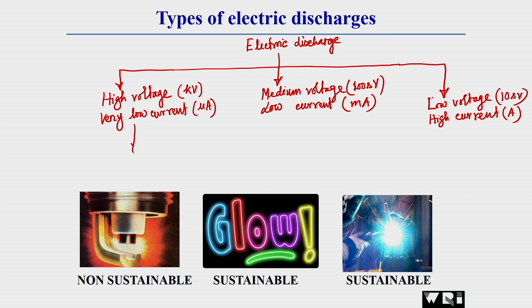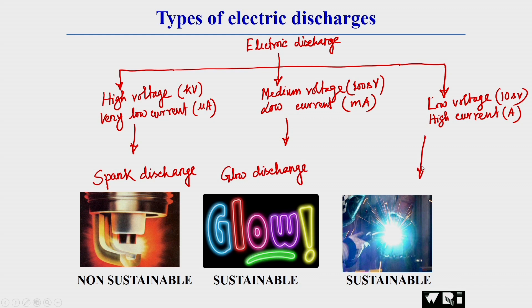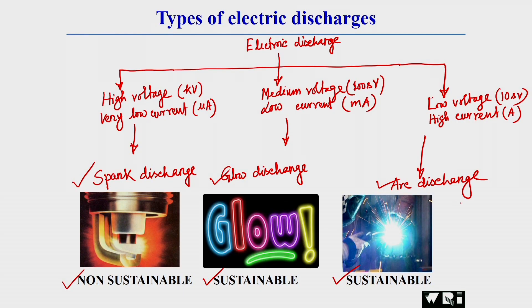The first category — high voltage, very low current — is called spark discharge. The medium voltage and low current category is called glow discharge. The third category is called arc discharge. Spark discharge is non-sustainable; glow discharge is sustainable but cannot generate the current required to melt the work piece. That is why arc discharge is essential for welding.